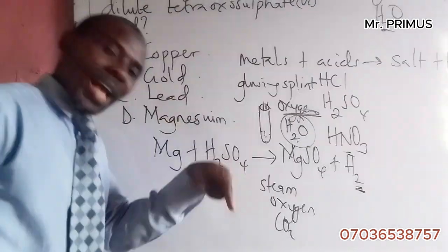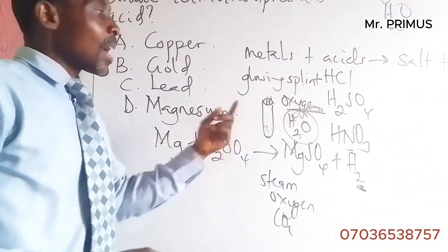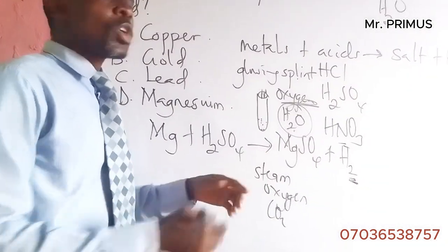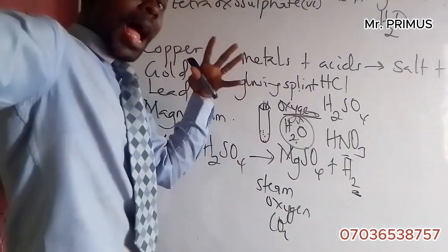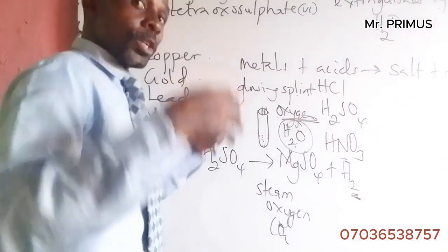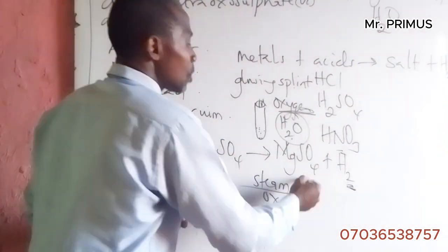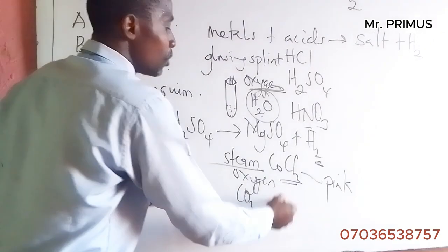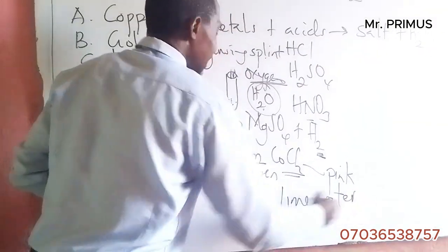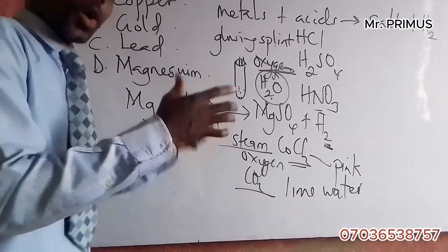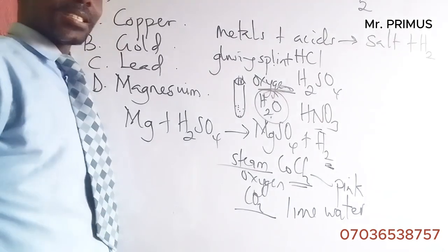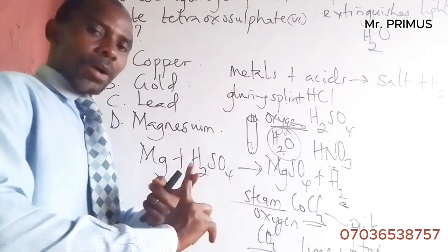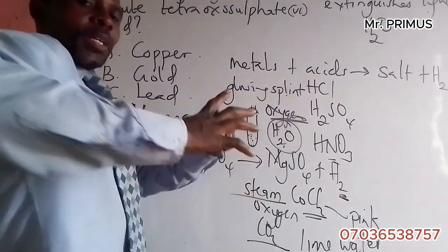So anytime you hear a pop sound, that is hydrogen gas. To test for hydrogen, bring a lit splint — pop sound. If it is oxygen, oxygen will rekindle the splint — it will make the light glow more. To test for steam, use cobalt(II) chloride — it will turn pink. To test for carbon dioxide, use lime water — carbon dioxide turns lime water milky.